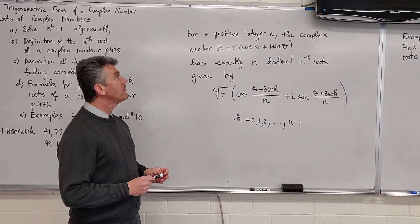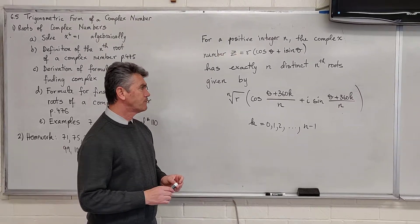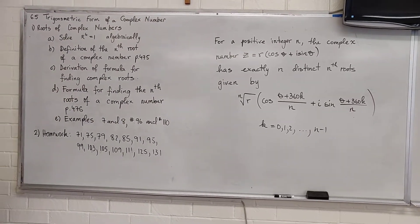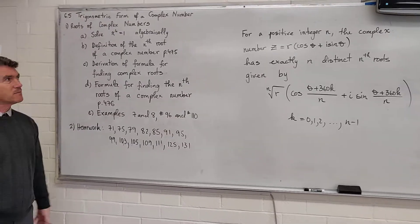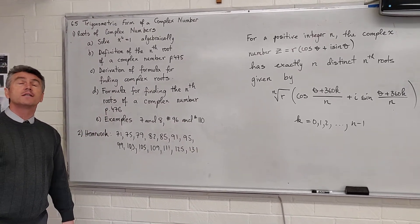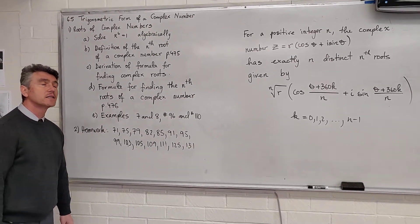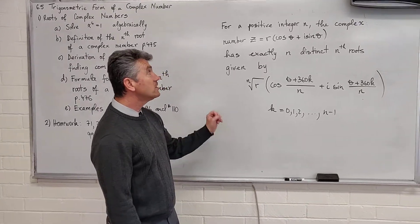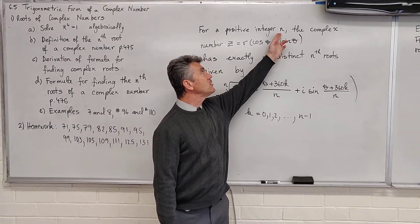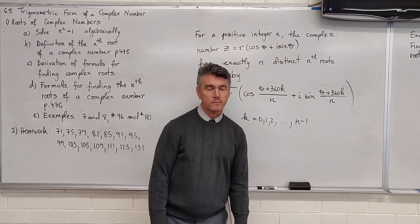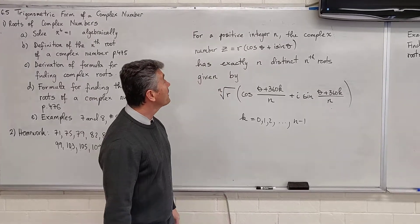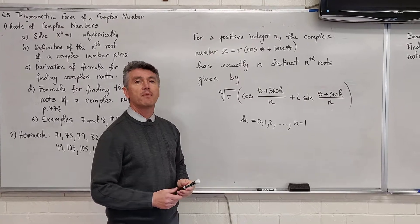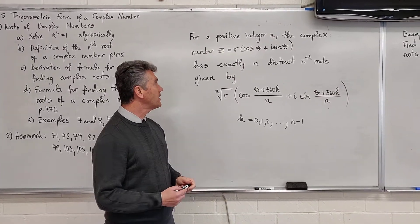In the last segment, we derived the formula. You'll find the formula written on page 476, but I put it on the board so you can see it as I'm doing different problems. First of all, we have a positive integer n. We have a complex number z, which is equal to r times cosine theta plus i sine theta.